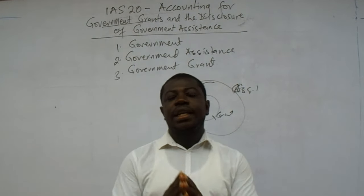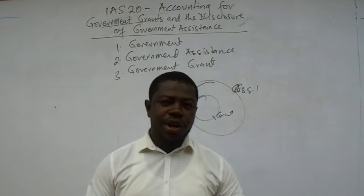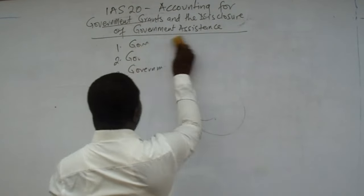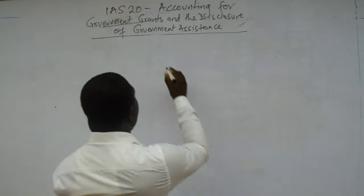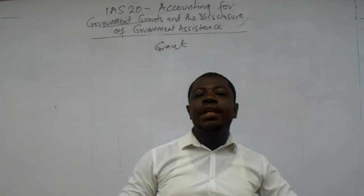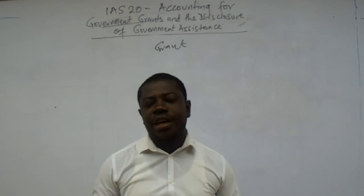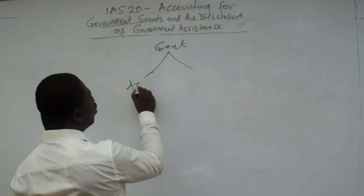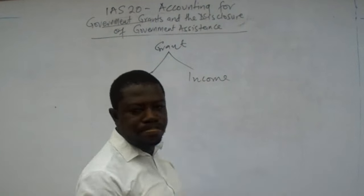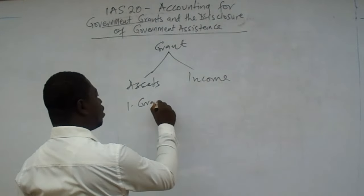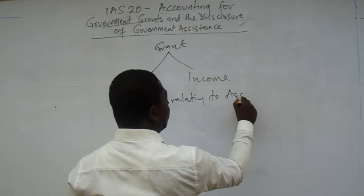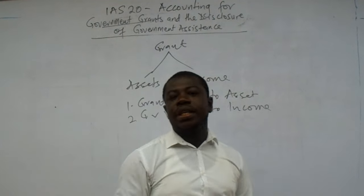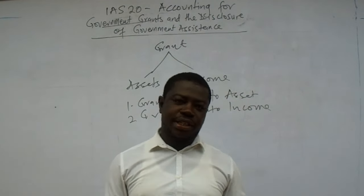Having understood this, let us focus more on grants. A grant is a subset of Assistance, so let us understand grants in detail. There are two main types of grants. Government grants could be classified under two main headings: grants relating to assets and grants relating to income.